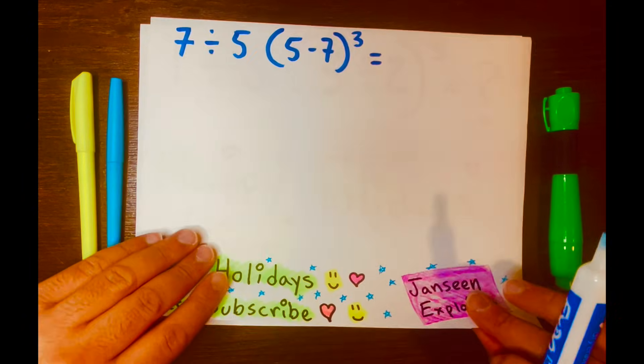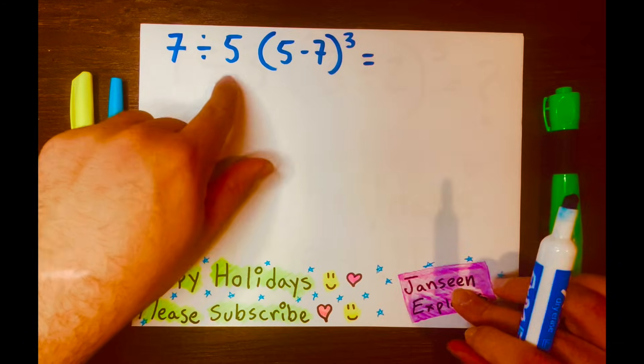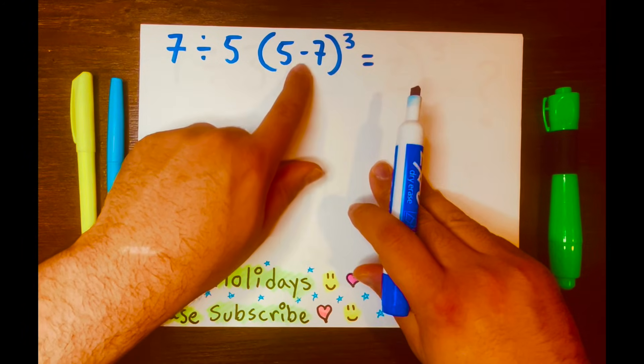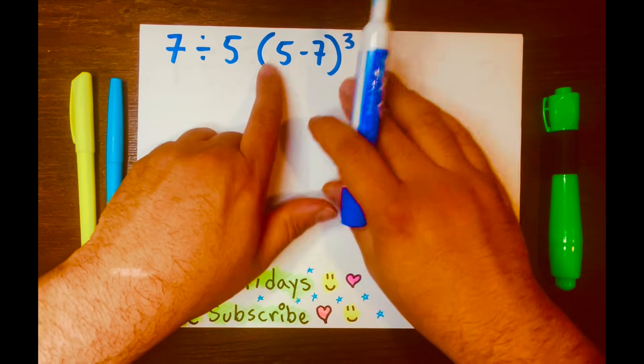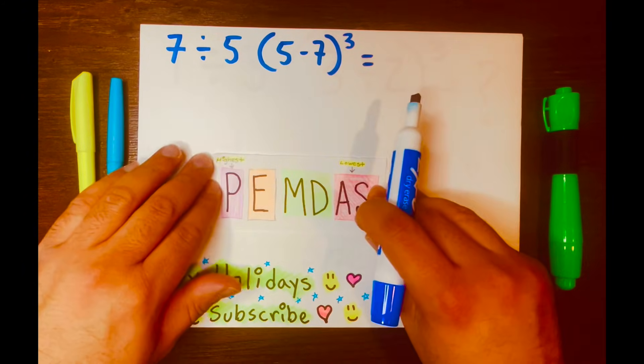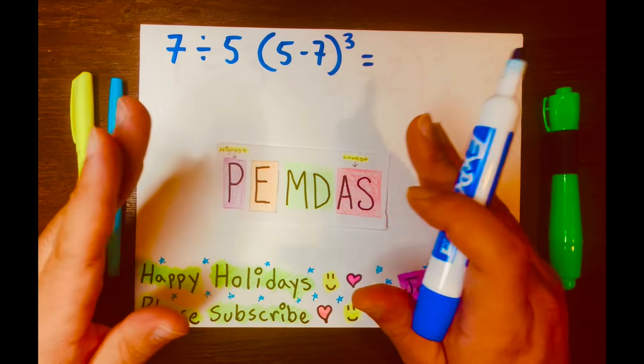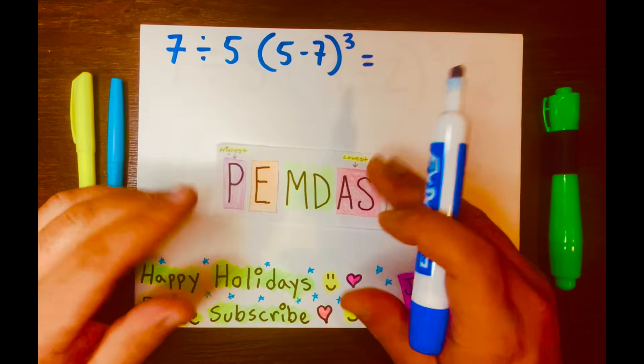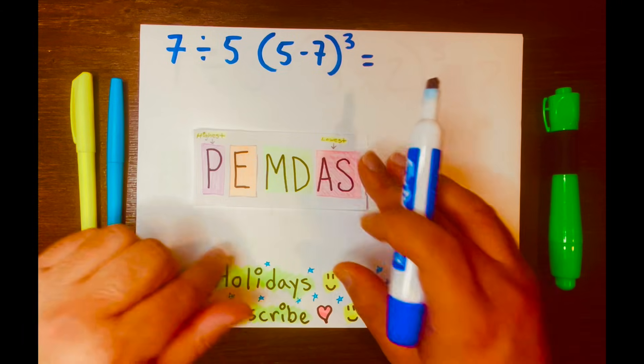Let's go ahead and solve this math problem. 7 divided by 5, and then you have 5 minus 7 inside these parentheses with an exponent of 3. We're going to need the help of PEMDAS, and PEMDAS is telling us that you are solving the math problem from left to right according to the levels in PEMDAS.